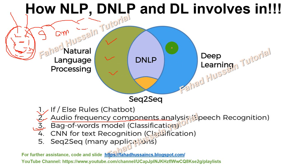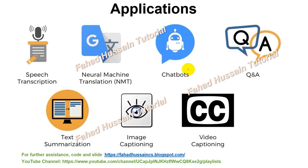Then we have deep NLP, which is used for text processing with CNNs and sequence-to-sequence models. Deep learning is heavily involved in natural language processing at this level.